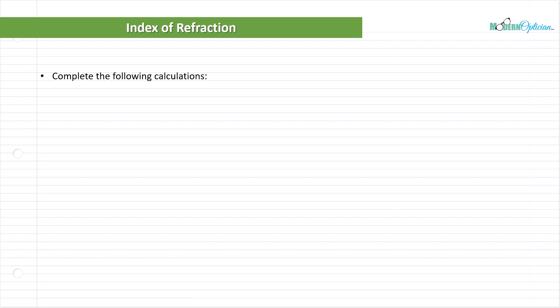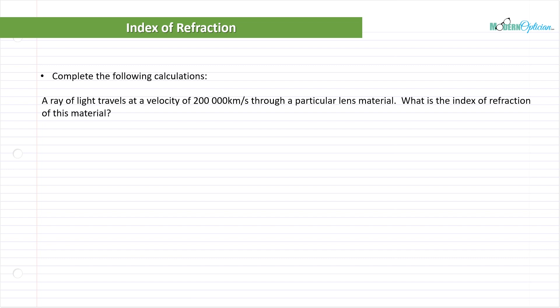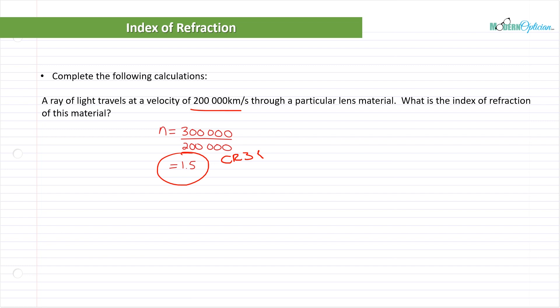Let's complete a calculation so we can understand — you will probably never have to calculate this as a dispenser, but we're going to do it once so we understand how this works. If a ray of light travels at a velocity of 200,000 kilometers per second through a particular lens material, what is the index of refraction of this material? We know the velocity of light is 300,000 kilometers per second, and the velocity through the material is 200,000. So if we divide one into the other, we get 1.5. And that is pretty darn close to CR39. So the concept is: it slows down to 200,000, and that is the index — the factor of what that lens does to light.